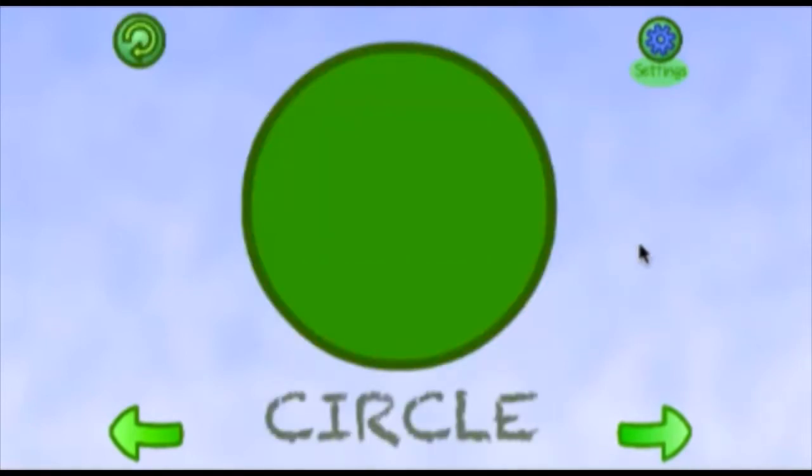This is a circle. It goes all the way around and it has no corners. This is a circle, it goes all the way around and it has no corners.